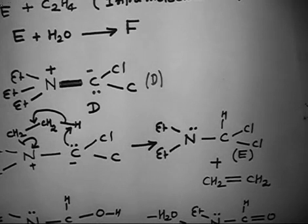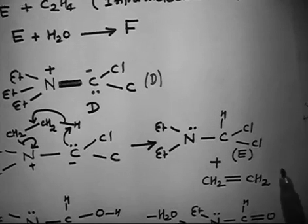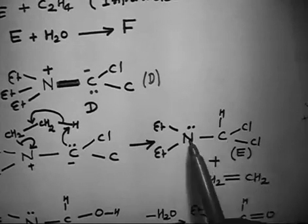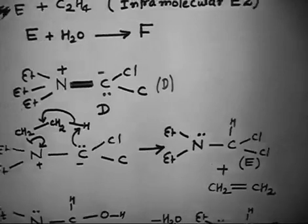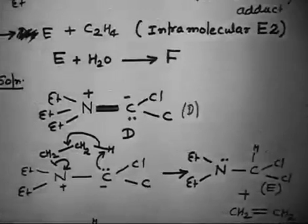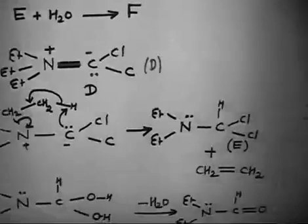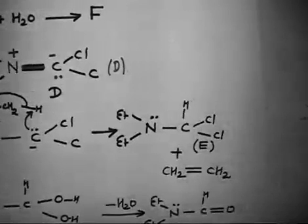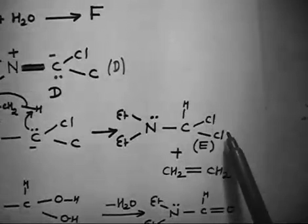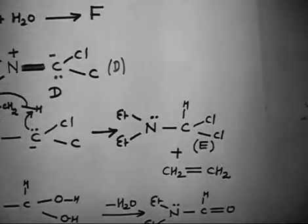So E has this molecular formula. You have another product C2H4. Now if E reacts with water, it forms F. Things are very simple now. Water will replace this Cl, so this replacement of Cl with OH gives you this structure.